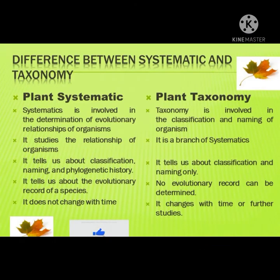The difference between systematics and taxonomy. In plant systematics, systematics is involved in the determination of evolutionary relationships of organisms. While in plant taxonomy, taxonomy is involved in the classification and naming of organisms. In plant systematics, it studies the relationship of organisms, while in plant taxonomy, it is a branch of systematics.